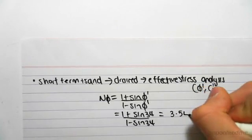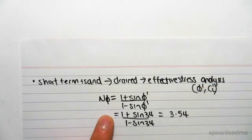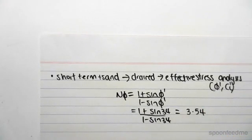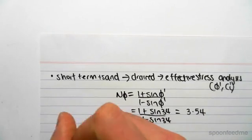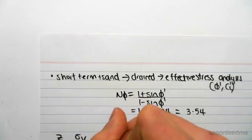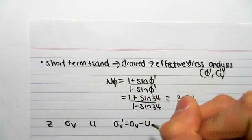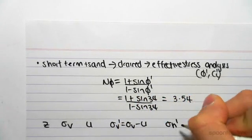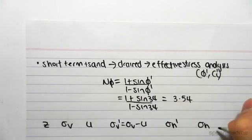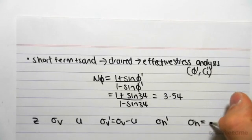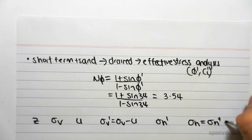So we've found N_phi and now we're going to construct our table. This one, because we're doing an effective stress analysis, it's a bit more tricky. So we're going to have z, sigma_v, u, sigma_v' (which we know is sigma_v minus u), sigma_h', and then we still need to get back to our total stress in the horizontal direction which is sigma_h (which equals sigma_h' plus u). So those are the headings of our columns.